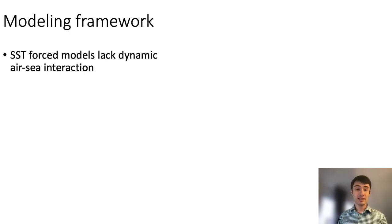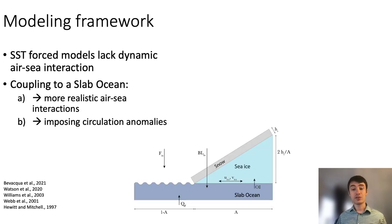This is difficult to do with typical SST-forced models since they lack dynamic air-sea interaction. Therefore, we turn to a slab model which we coupled to our atmospheric HadAM4 model, which gives us more realistic air-sea interactions and an intuitive way to impose circulation anomalies. Let me briefly talk you through this model.